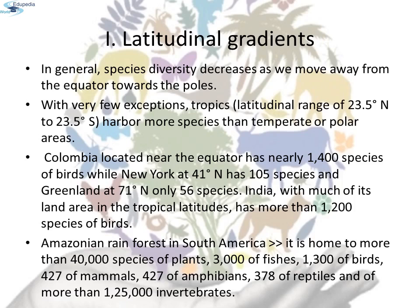In general, species diversity decreases as we move away from the equator towards the poles, with very few exceptions. The tropics, that is the latitudinal range of 23.5 degrees north to 23.5 degrees south, harbor more species than temperate or polar areas. Colombia, located near the equator, has nearly 1,400 species of birds, while New York at 41 degrees north has 105 species, and Greenland at 71 degrees north has only 56 species. India, with much of its land area in the tropical latitudes, has more than 1,200 species of birds.